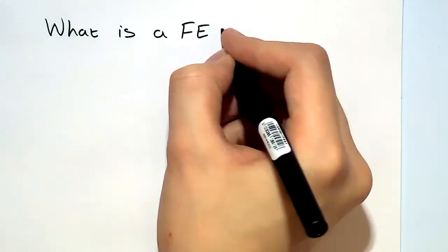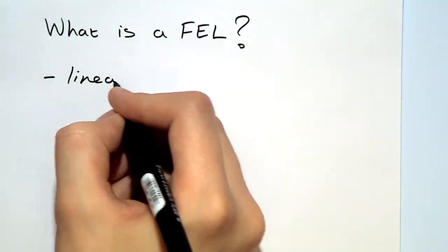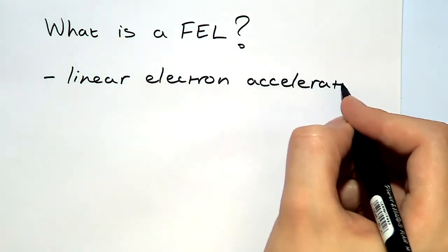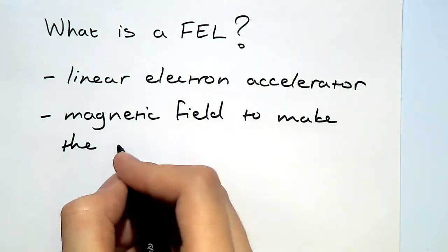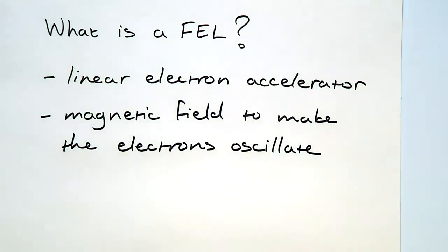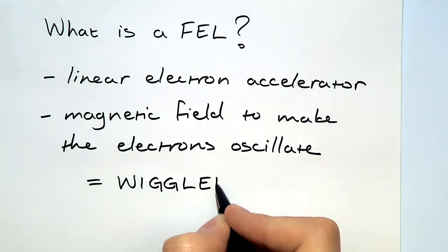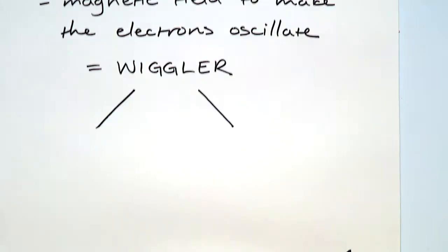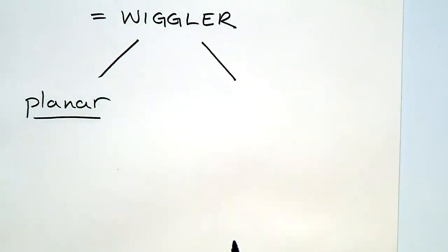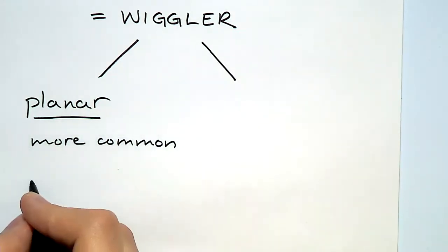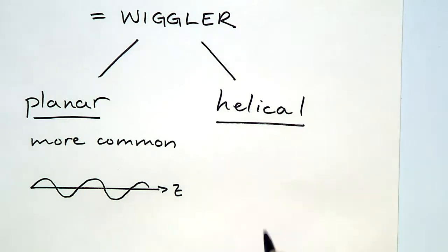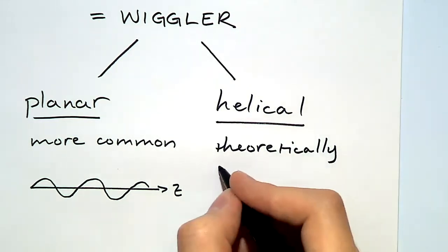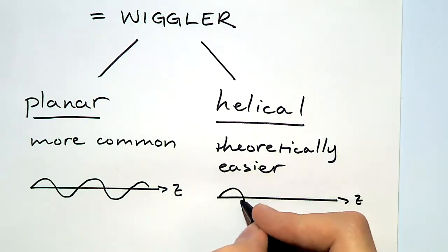Let us begin by looking at what exactly the free electron laser is. Fundamentally, it's a linear electron accelerator with an external magnetic field to make the electrons oscillate. This magnetic field is called the wiggler. There are two basic types: planar wiggler, which is more common and easier experimentally, and the helical wiggler, which is theoretically easier to treat.